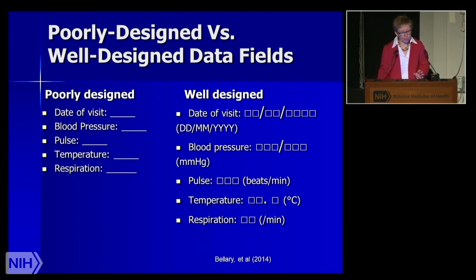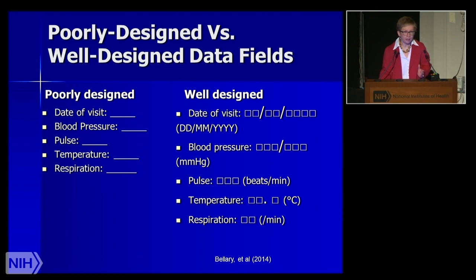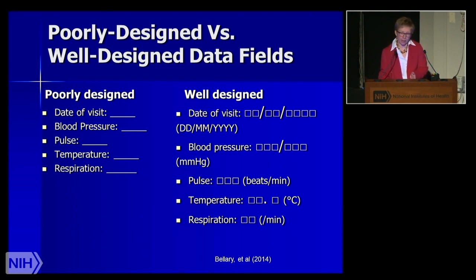A poorly designed CRF simply asks for information with a blank line, expecting everyone to understand what data and numbers are wanted. A well-designed CRF provides labeled boxes to fill in along with an explanation of what those boxes should contain — for example, specifying day/month/year for visit date, millimeters of mercury for blood pressure, and beats per minute for pulse. This ensures consistent information, whereas a poor design may return unusable data requiring queries back to sites.